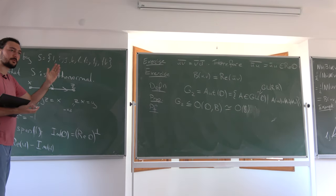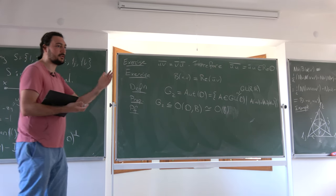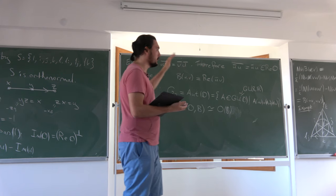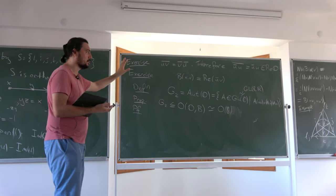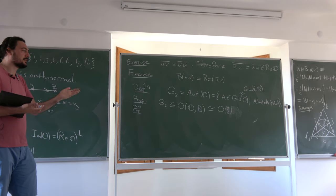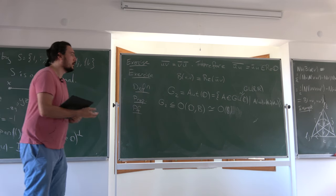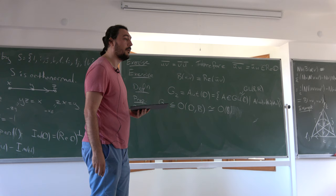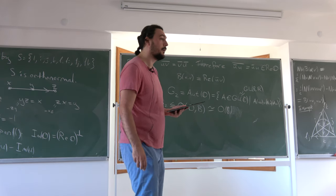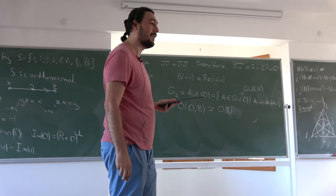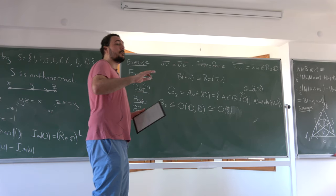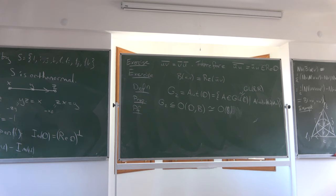This fibration structure immediately tells us many things. The corollaries are: first, G2 is a subgroup of SO(7) — because it's connected, it must lie in the connected component. Second, the dimension of G2 is 14 (6 + 5 + 3). Third, G2 is compact. For complex G2, it's not compact, but its maximal compact subgroup is this compact G2.